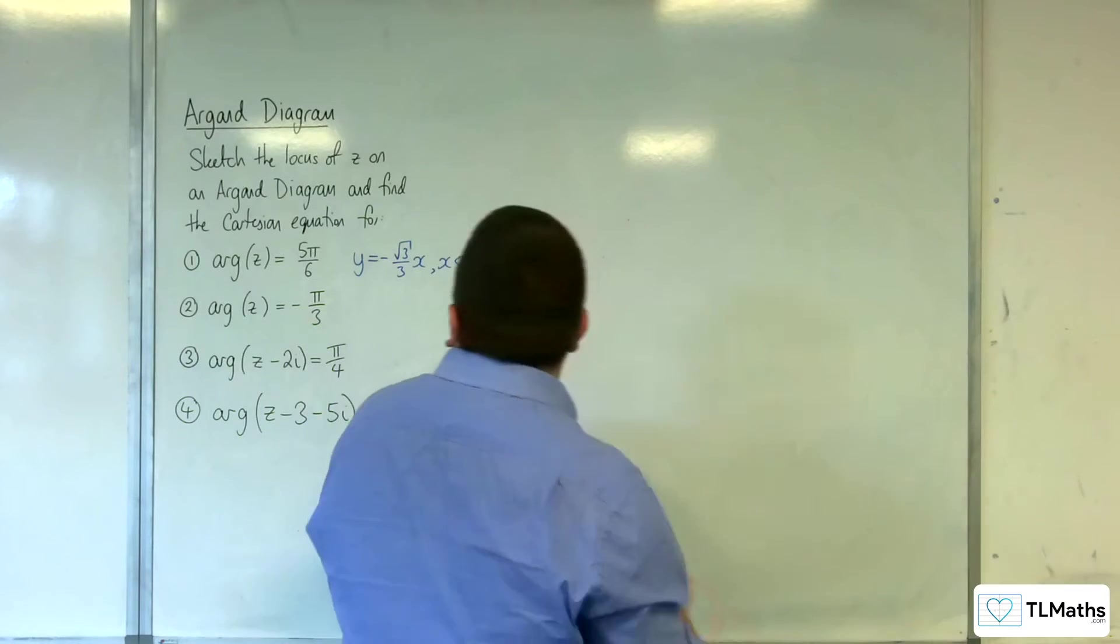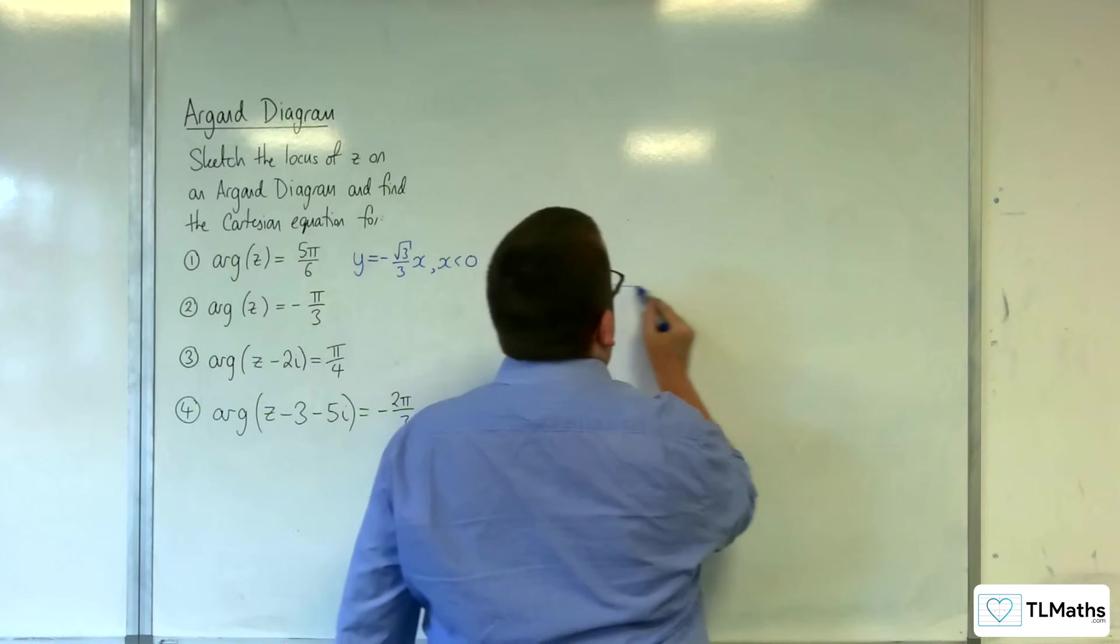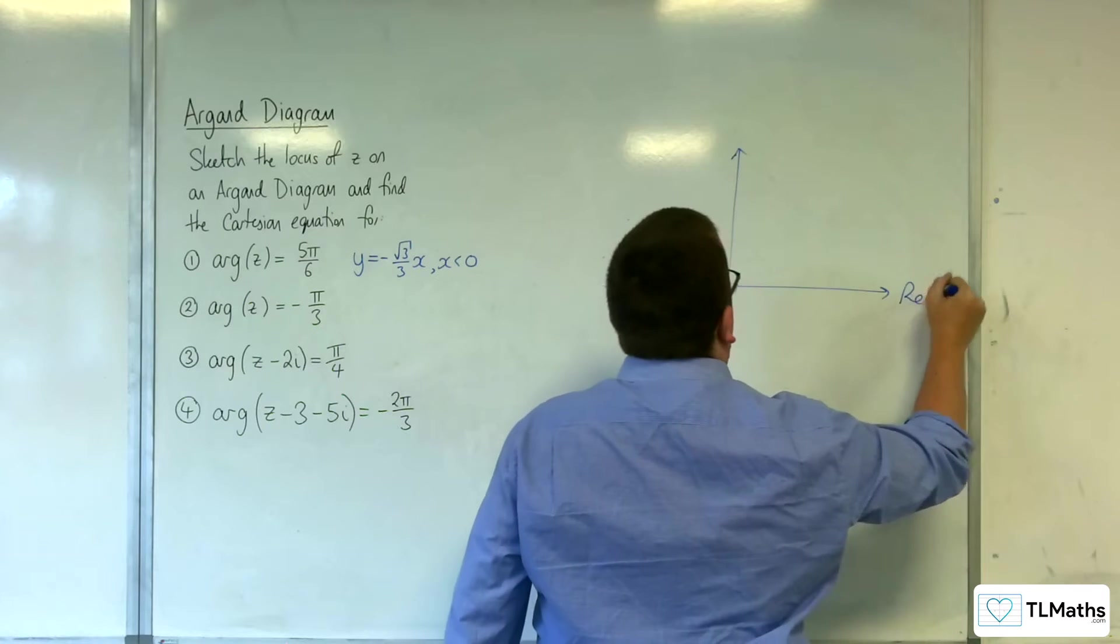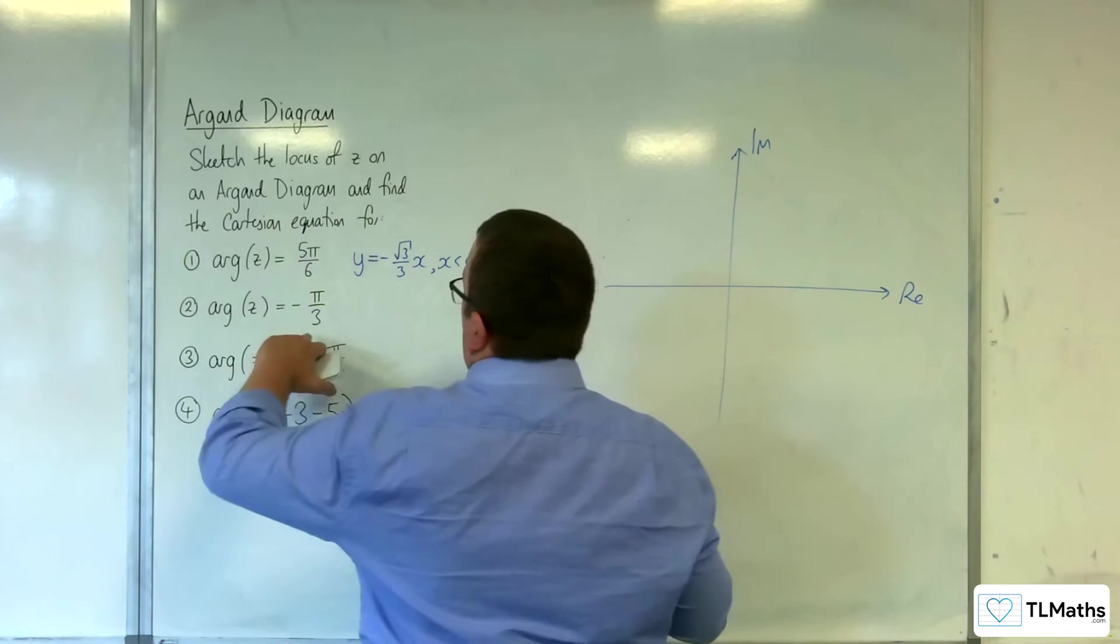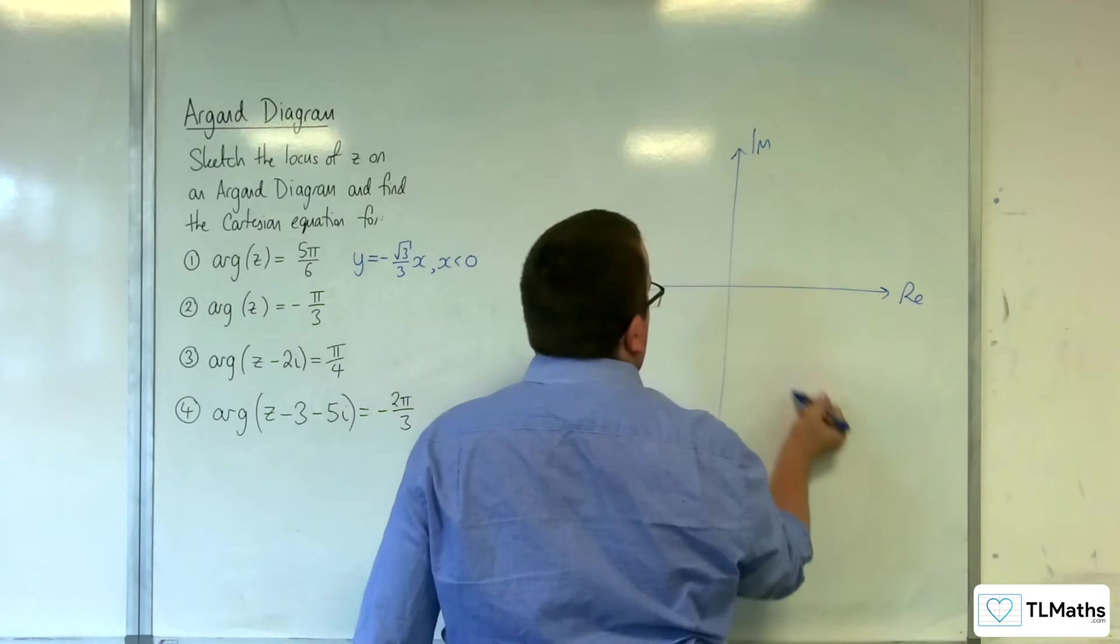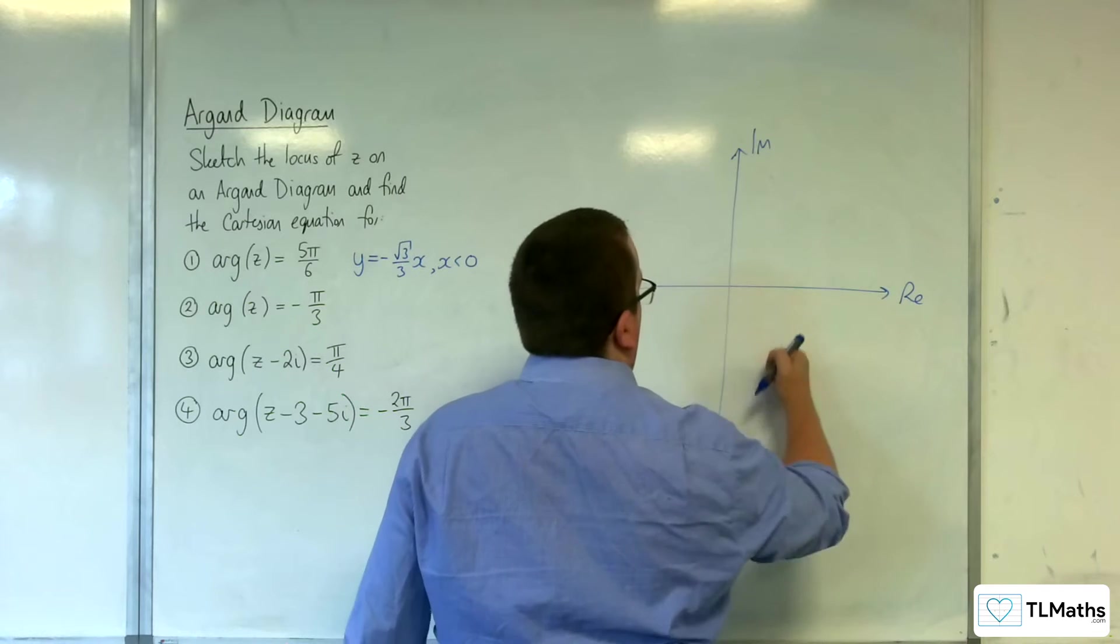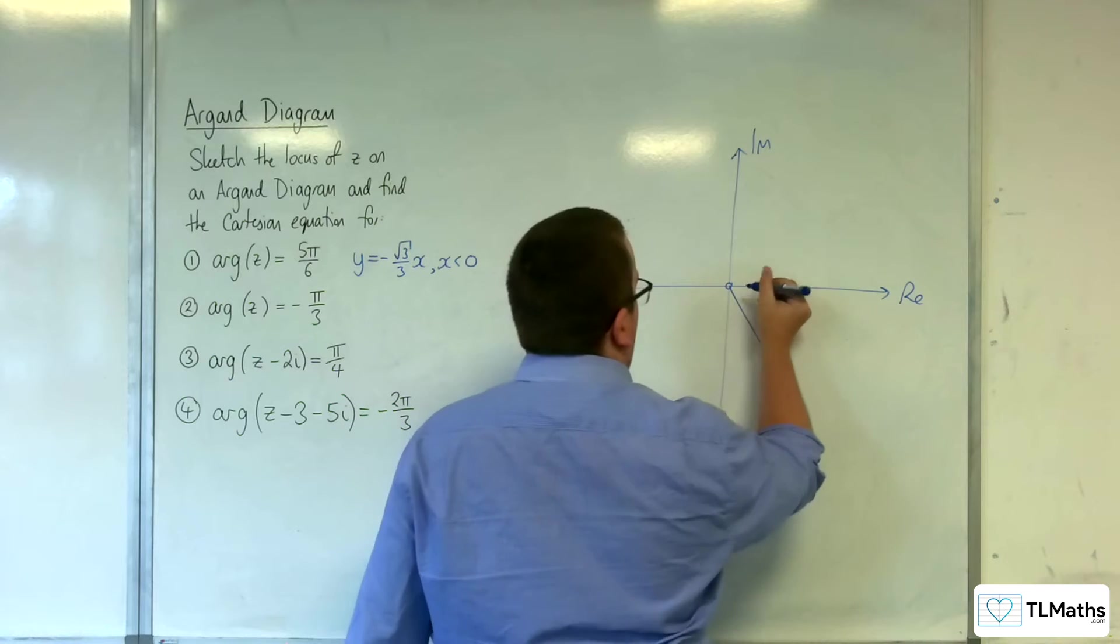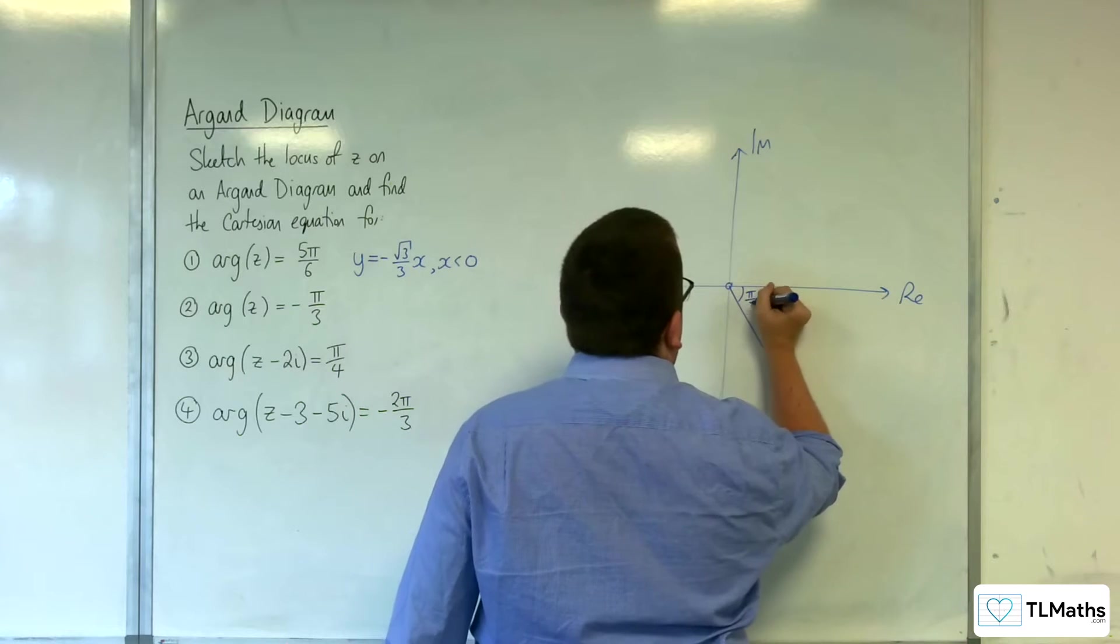Right, let's have a look at number 2. The argument of z is equal to minus π over 3. So, real axis, imaginary axis. Minus π over 3 is somewhere down here. More like that, I guess. So, not including the origin. That angle is π over 3.